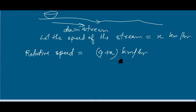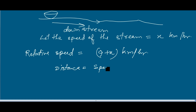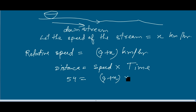The stream is supporting the boat. If the boat were traveling upstream, the stream would restrict it — putting resistance against the boat — and the net speed would be less, so we would subtract the stream speed. But here it is supporting the boat, so we add the speed of the stream. As per the condition, distance equals speed into time: 54 equals (9 plus x) into 4.